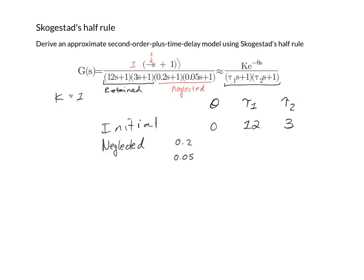I've written down the neglected time constants in rows of their own so that we can fill in our table. We also need to take into account the right-hand plane zero which we will also neglect, which has a time constant value of minus 1.